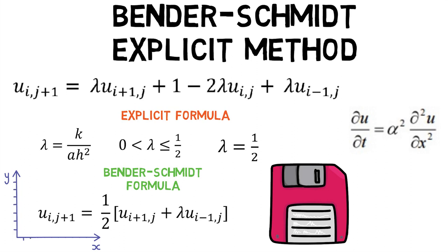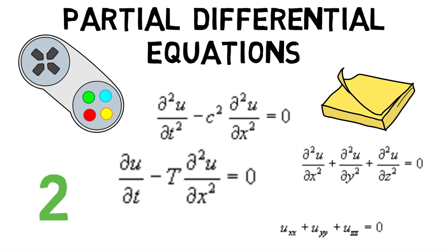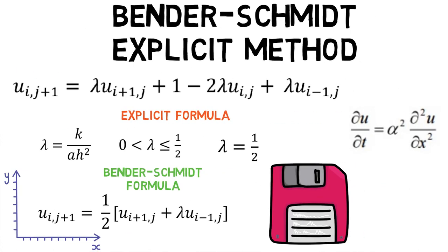The values of i and j are then filled in a table to present the solution. Hence, we first saw what partial differential equations are and then went on to see how numerical solutions of PDEs are obtained using Bender-Schmidt explicit method.